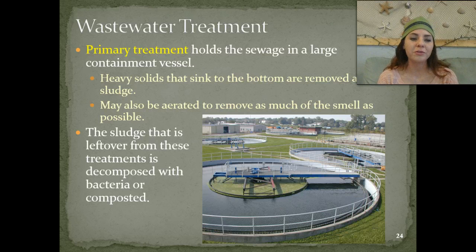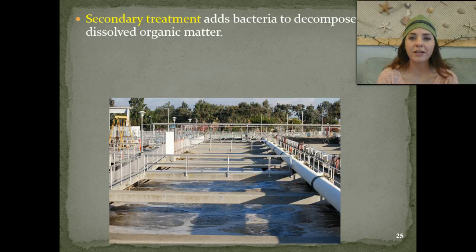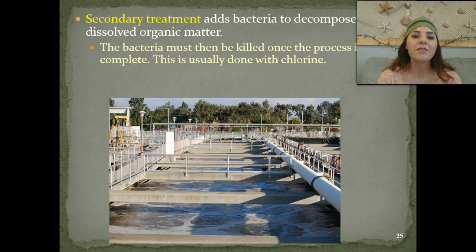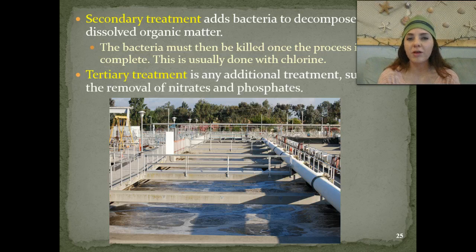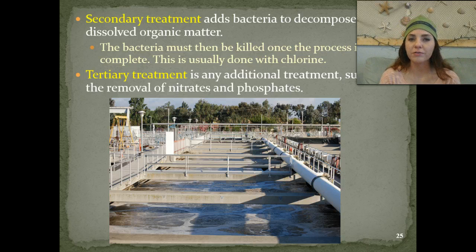The sludge left over from those treatments is sometimes decomposed using bacteria, and eventually it can also be composted. Secondary treatment adds bacteria to decompose dissolved organic matter — organic meaning it contains carbon. The bacteria eventually have to be killed once they've conducted their process, meaning we add chlorine in order to disinfect the water. Sometimes we also have a tertiary treatment, which can remove different things such as nitrates and phosphates from the water — for instance, if we're trying to prevent algal blooms when that water is going back into a nearby stream or river.